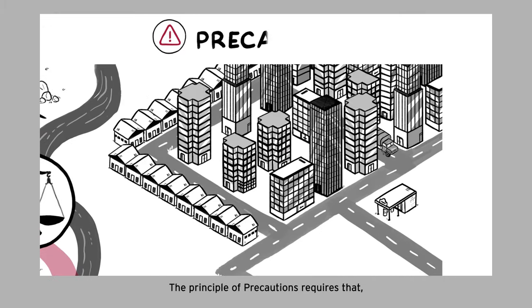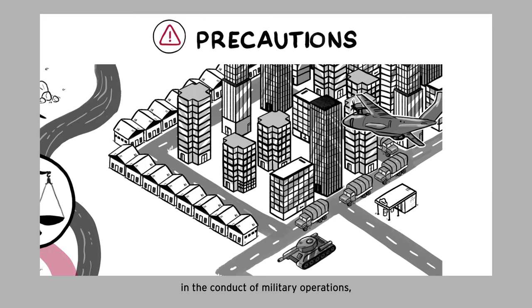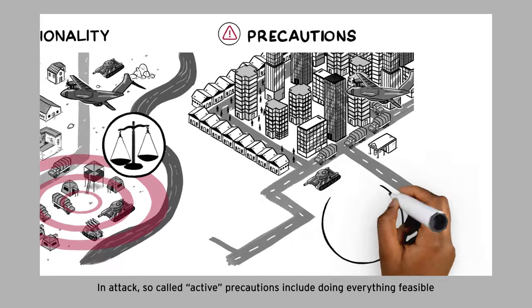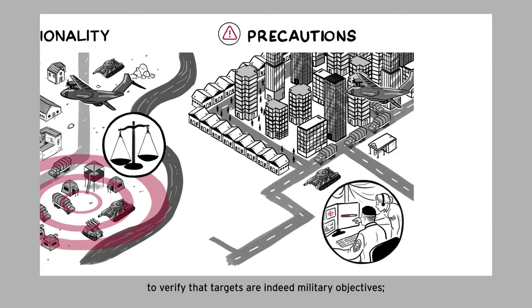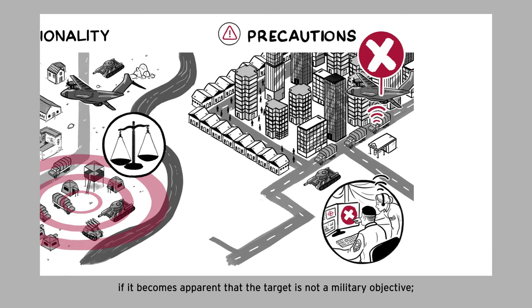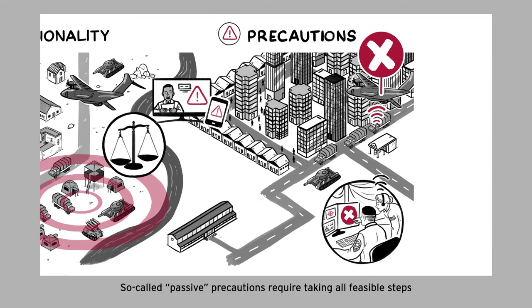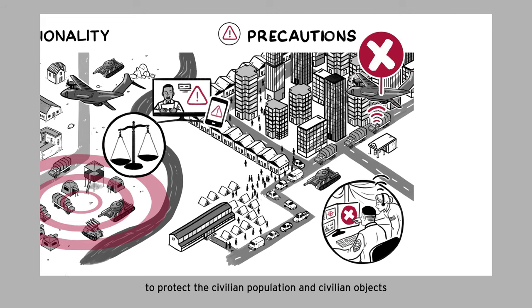The principle of precautions requires that, in the conduct of military operations, constant care must be taken to spare the civilian population, civilians, and civilian objects. In attack, so-called active precautions include doing everything feasible to verify that targets are indeed military objectives, cancelling or suspending an attack if it becomes apparent that the target is not a military objective, and giving effective advance warning of attacks which may affect the civilian population, unless circumstances do not permit. So-called passive precautions require taking all feasible steps to protect the civilian population and civilian objects under one's control against the effects of attacks.